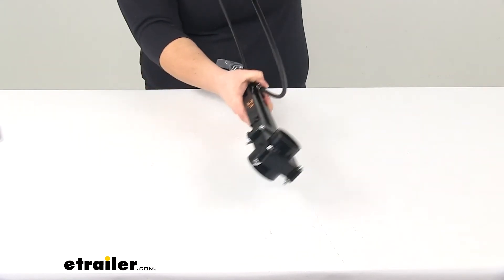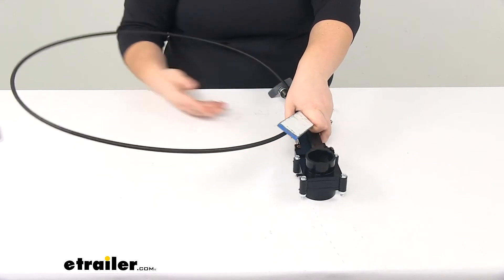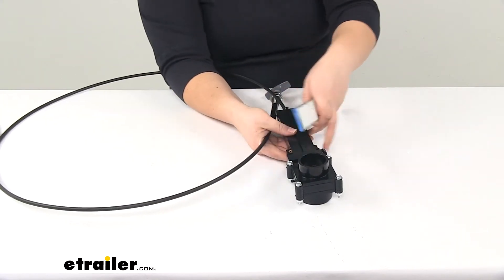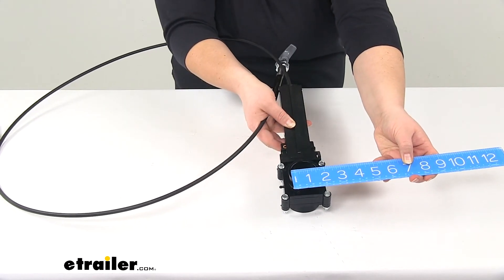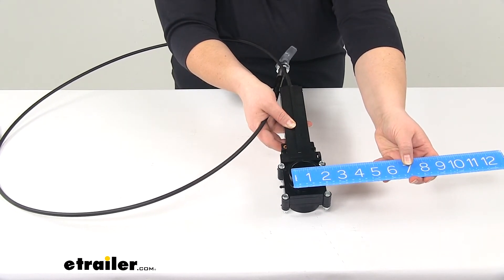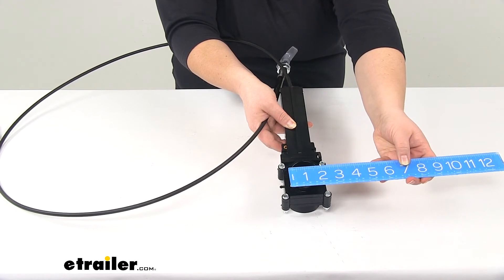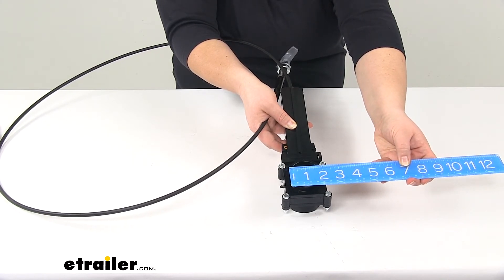If we flip that over to the smaller side or our spigot side, the inner diameter is going to be that one and a half. And the outer diameter is going to be one and seven eighths of an inch.